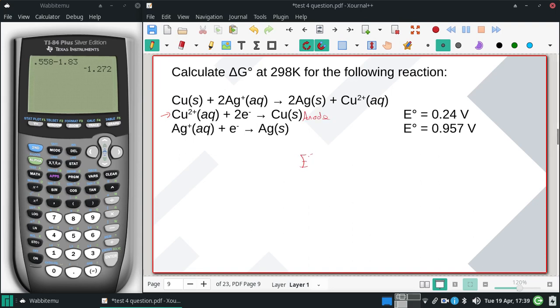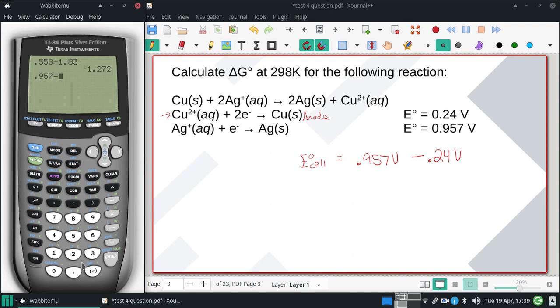So my E° for the cell is gonna be that cathode plus the anode, but I'll flip the sign for the anode. So I have 0.957 minus 0.24 gives me an E° of 0.717 volts.